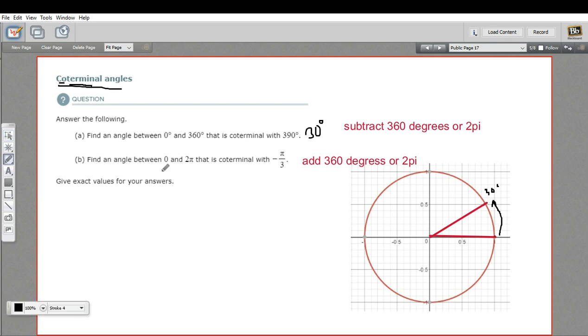Let's try this next one. It says find an angle between 0 and 2 pi. That's the same as between 0 and 360. So one revolution around the circle, somewhere in that one revolution. That is coterminal with negative pi over 3.